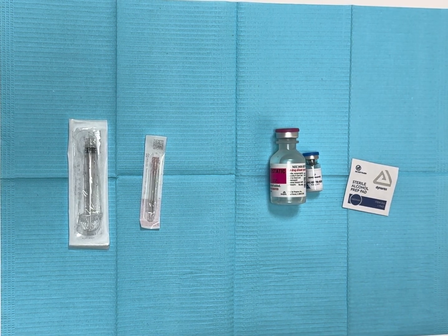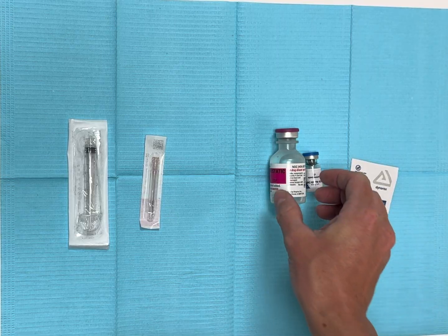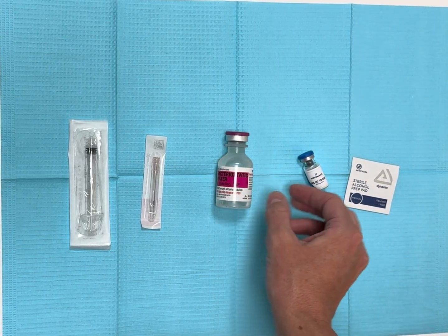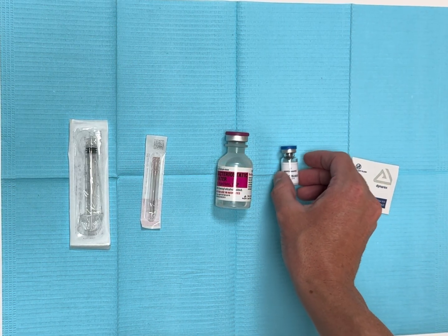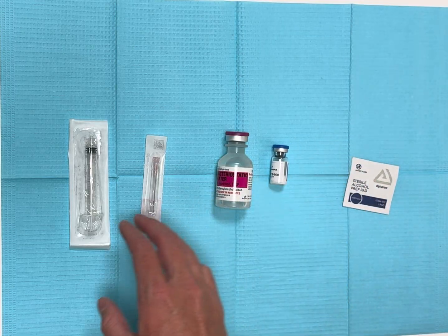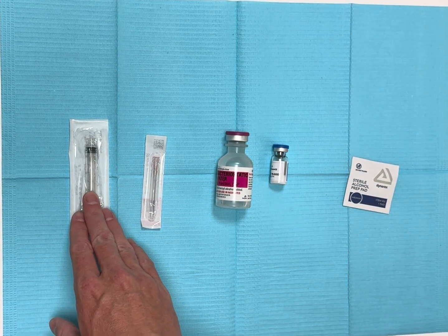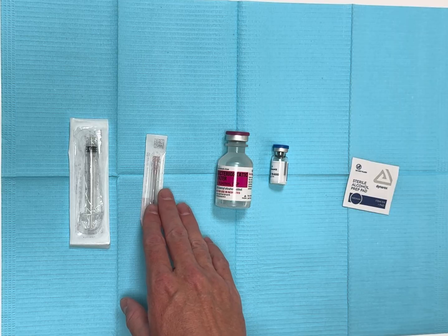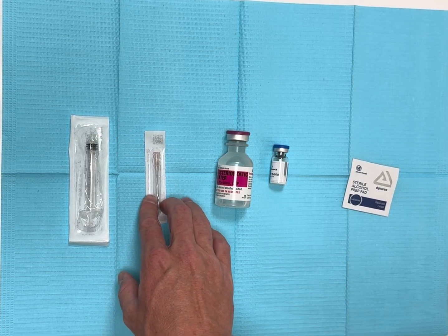In this video we're going to show you how to reconstitute your peptides. You will see laid out here your peptide, your 3 ml mixing syringe, your 18 gauge 1 inch mixing needle, your bacteriostatic or mixing water, and you'll have a sterile alcohol pad.